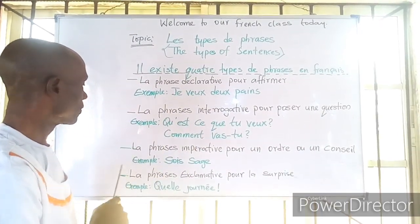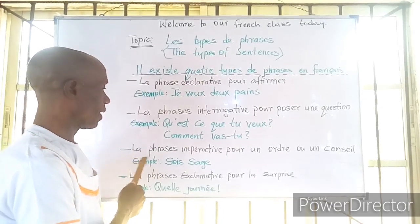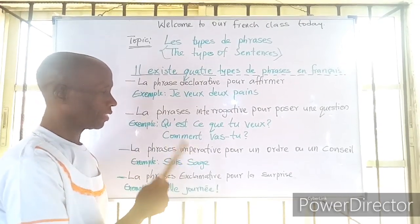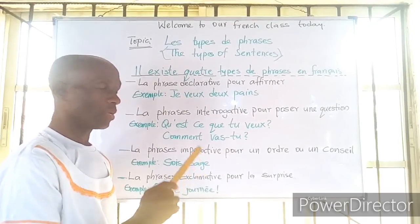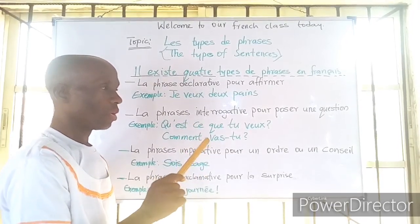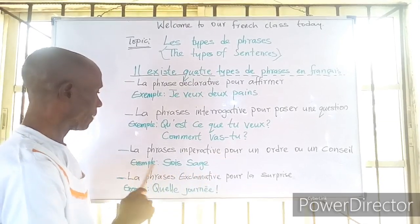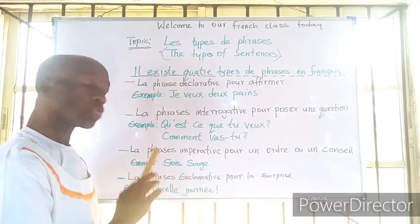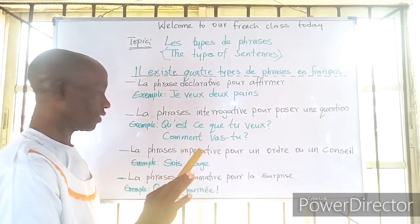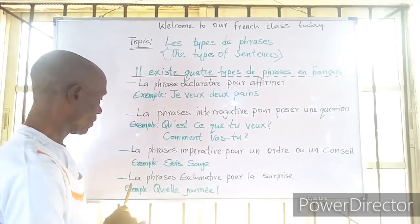'Sois sage!' The third one is la phrase impérative — pour un ordre ou un conseil. For example: 'Sois sage.'